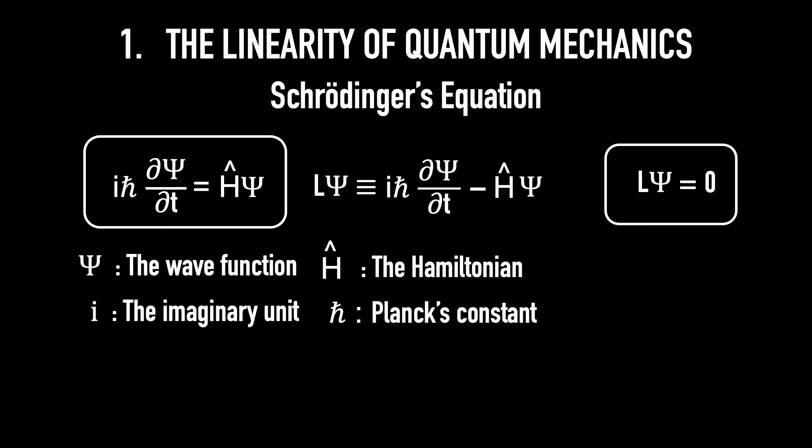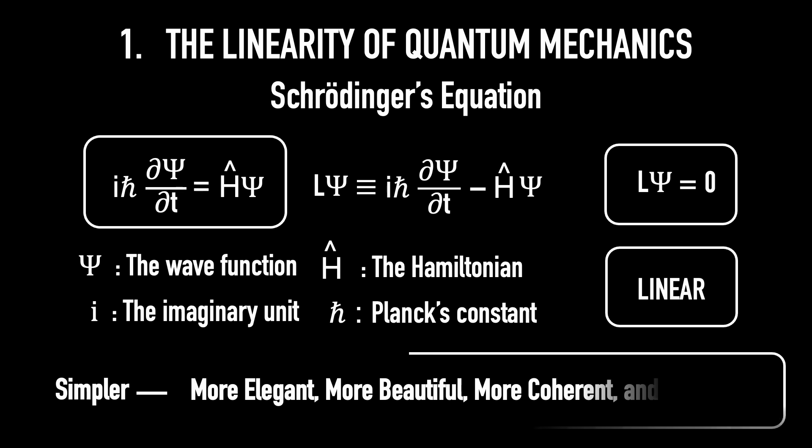Therefore, Schrödinger's equation and quantum mechanics is linear. In that sense, quantum mechanics is actually simpler than classical mechanics. More elegant, more beautiful, more coherent, and very nice.